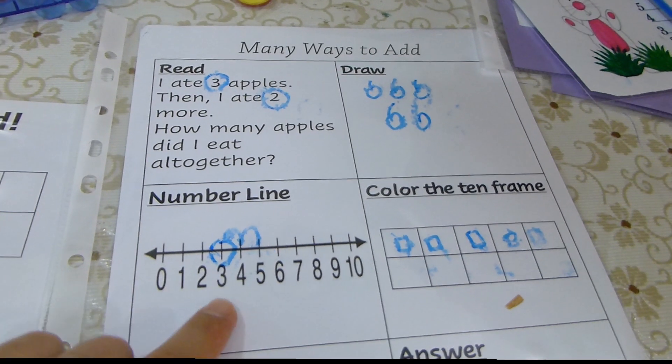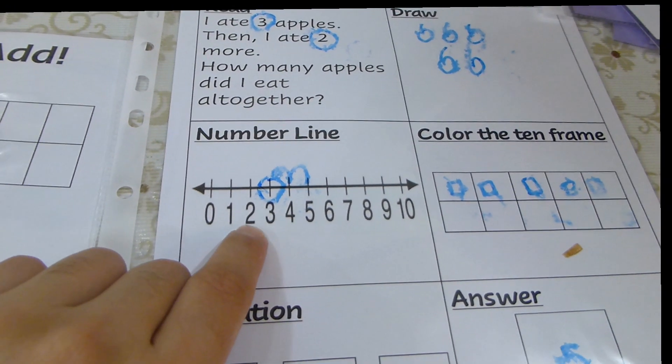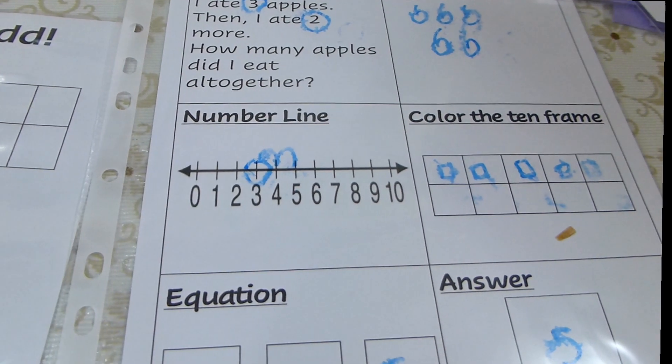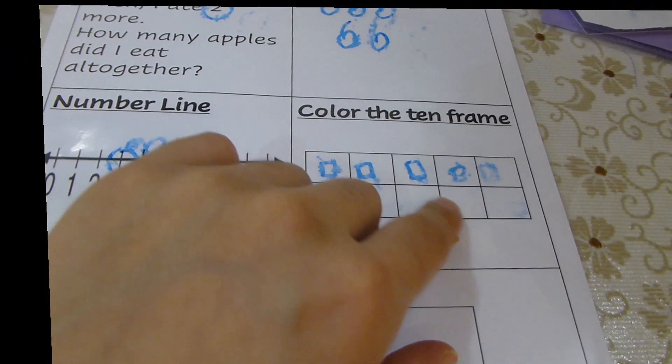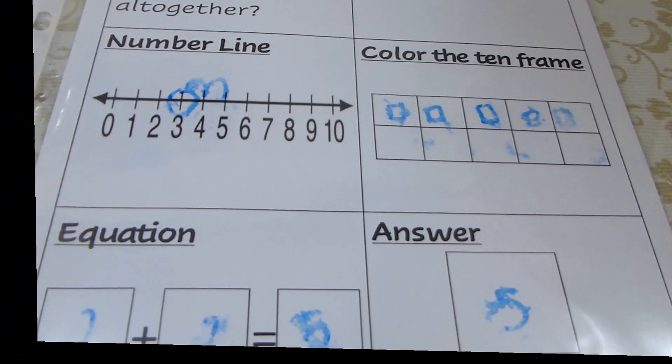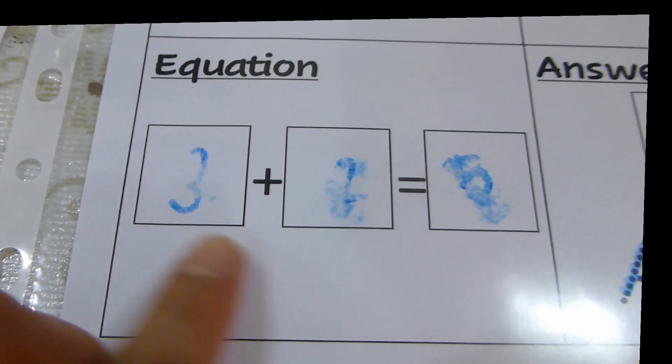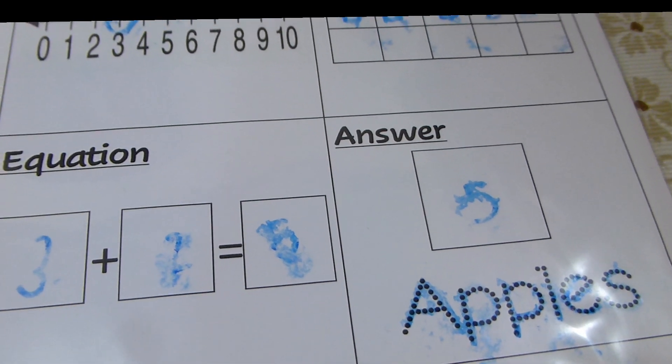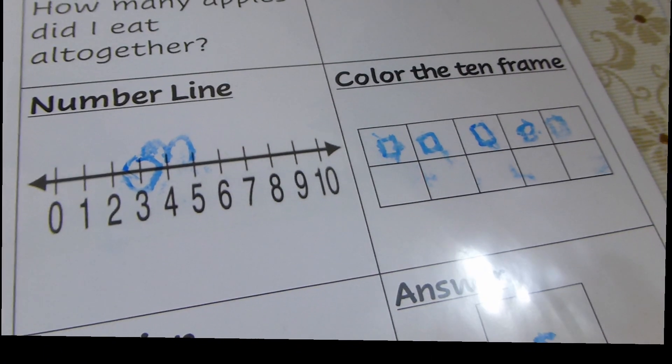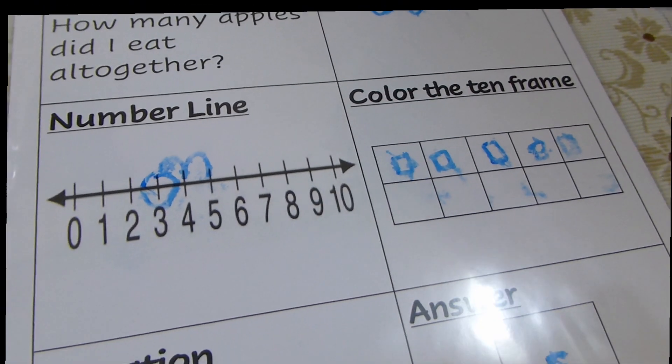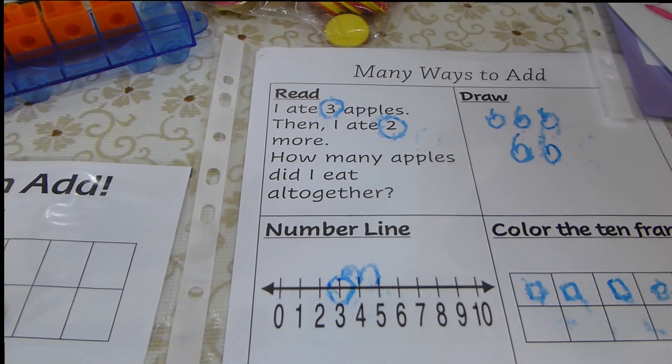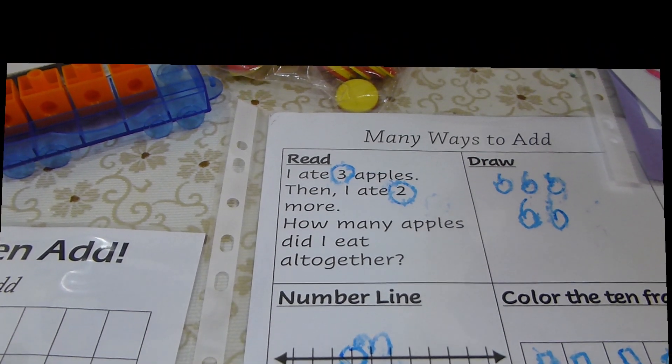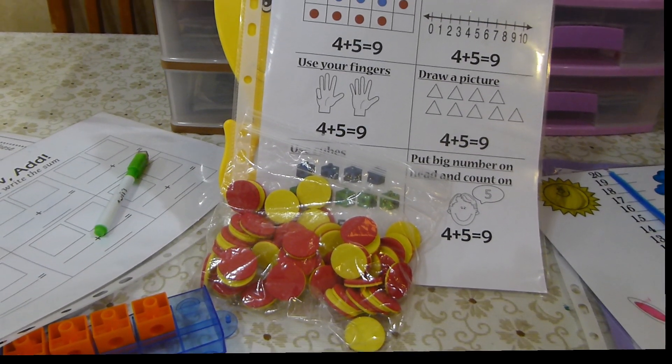The child will represent by drawing the apples, the number of apples, by using the number line strategy. He will circle number 3 because this is the bigger number and he will go forward 2 times. He will use the 10 frames to represent the word problem. He will use the equation to write 3 plus 2 equals 5. The answer is 5 apples. He will try to trace the word apples over here. I really find that these strategies are very helpful for my kids. I have another one for subtraction. You can use these strategies with addition and subtraction too.